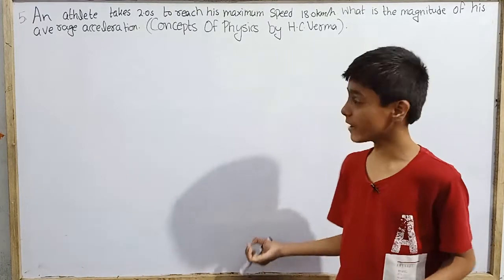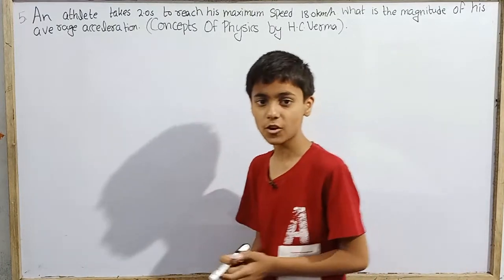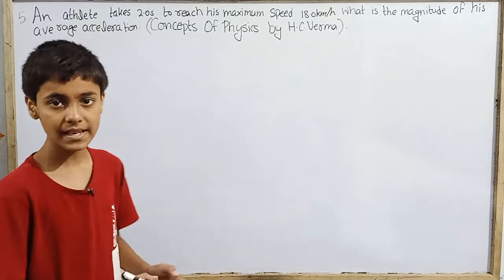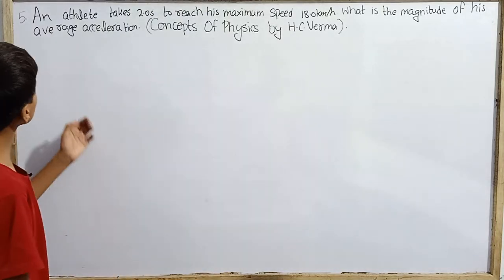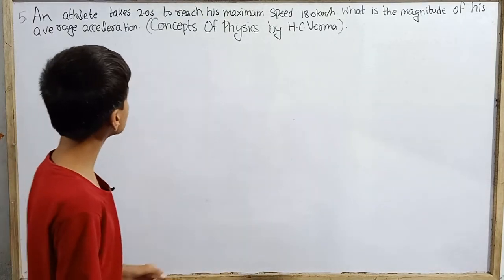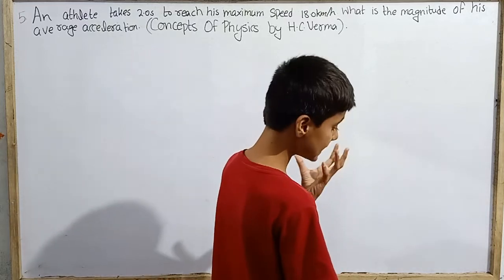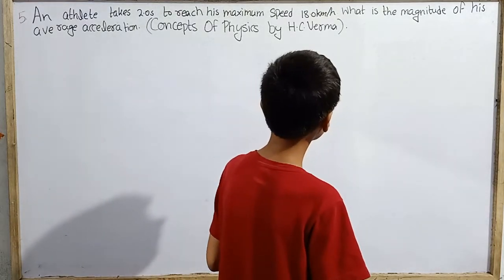Hello everyone, and once again we are back to question number 5 from Concepts of Physics by Professor H.C. Verma from kinematics, which says that an athlete takes 2.0 seconds to reach his maximum speed of 18.0 kilometers per hour.